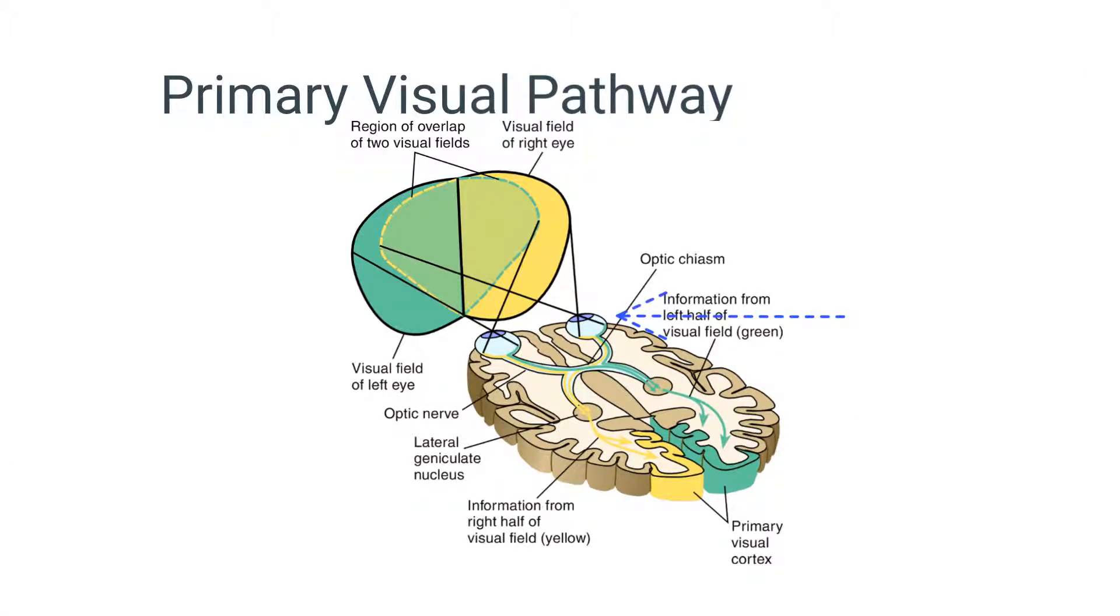Information travels from the retina in the eye to the optic nerve through the optic chiasm, the optic tract, the lateral geniculate nucleus of the thalamus, the optic radiations, and primary visual cortex.